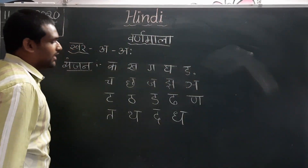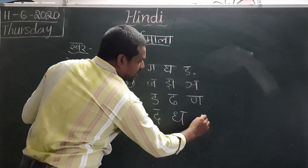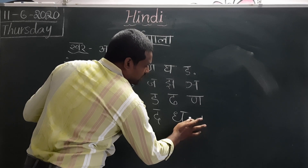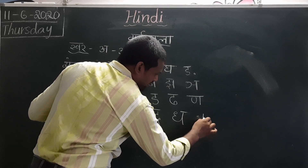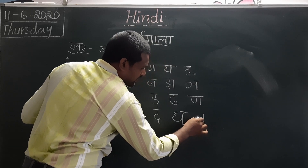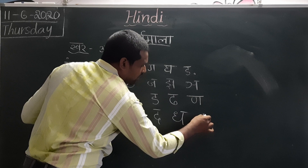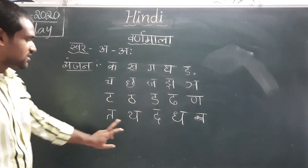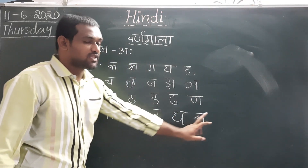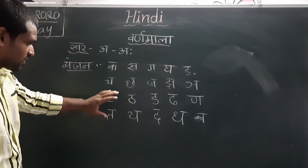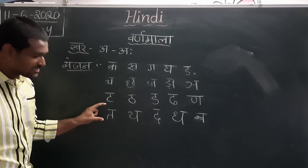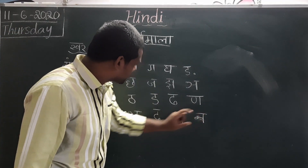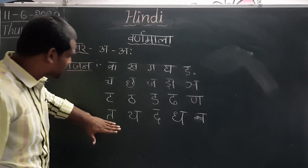The next letter is Na — a simple letter: straight line, straight line, small round, straight line. So Ta, Tha, Da, Dha, Na — this is all called the Ta Varga.